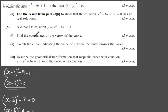In part b, the first part, we've got here for two marks: a curve has equation y = x² - 6x + 11 and we need to find the coordinates of the vertex of the curve.